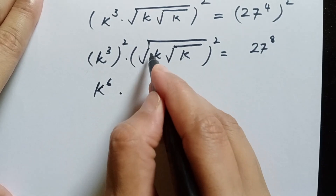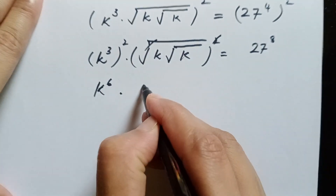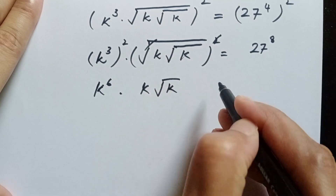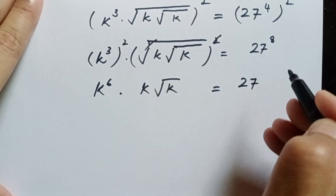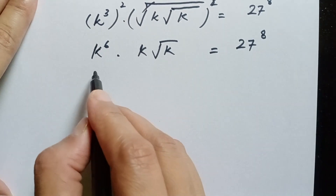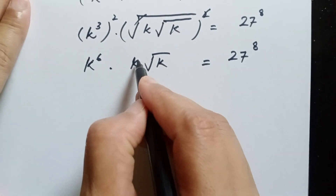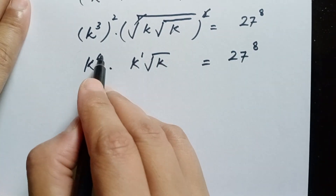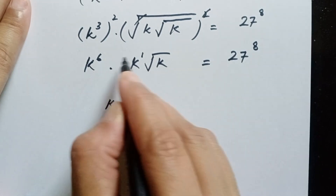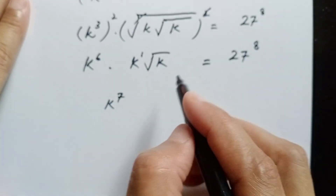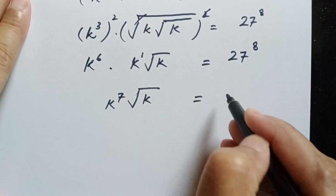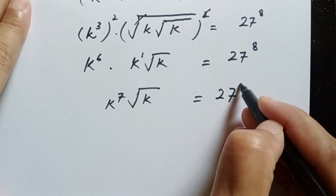So here we have 3 times 2 is 6, giving k to the power of 6. This k has power 1, so we can add the powers: k to the power of 6 plus 1 is 7. So we have k to the power of 7 times square root of k is equal to 27 to the power of 8.